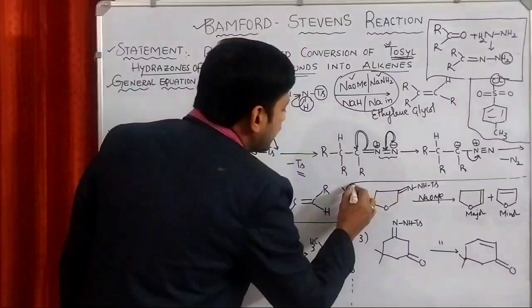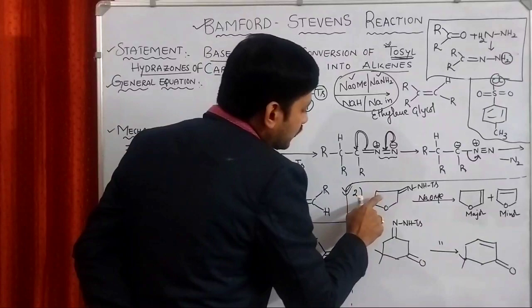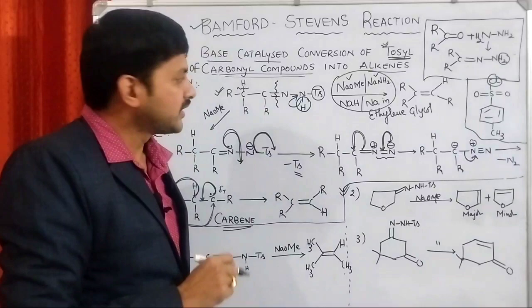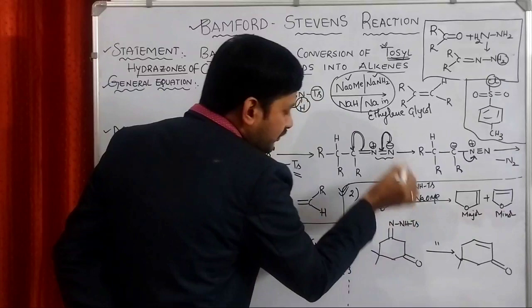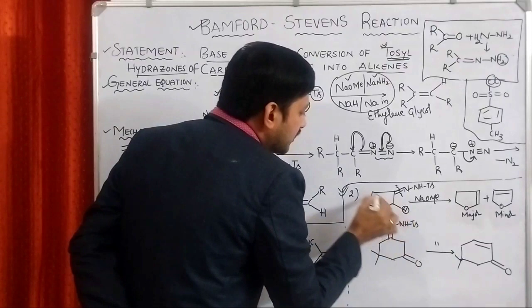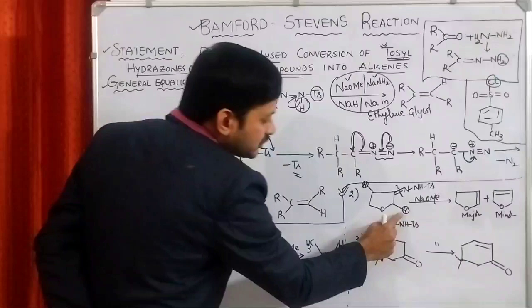If you see this particular moiety, it is the tosyl-hydrazone of carbonyl compound. Simply, if you see the reactant, we are removing hydrogen from this carbon and pi bond from this carbon. We need to remove pi bond from this carbon. At the alpha position, we need to remove the hydrogen. But in this case, we are having two hydrogens.